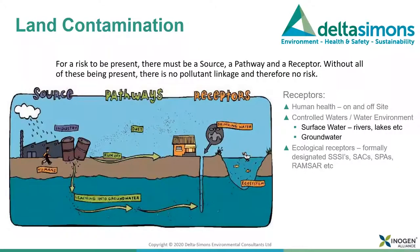Just because a site has contamination within or beneath it does not mean it is 'contaminated' under the UK definition. We have to demonstrate that a receptor is actually posed a risk from contamination via some pathway. Specific receptors include: human health on and off site, controlled waters — both surface water and groundwater — and statutory designated ecological receptors such as SSSIs, Special Areas of Conservation, Special Protection Areas, and Ramsar wetland sites.